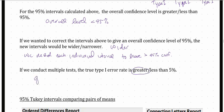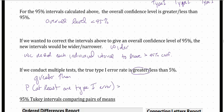If we conduct multiple tests, is the true type 1 error rate going to be greater than or less than 5%? The true type 1 error rate is going to be greater than 5%. When we do multiple tests, the probability of at least one type 1 error across all those tests is greater than the probability of a type 1 error for any single one of those tests.